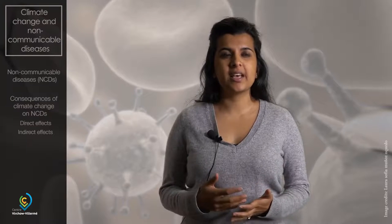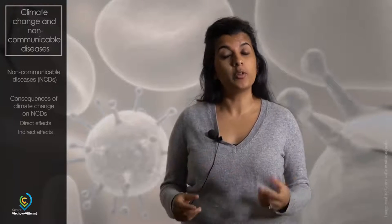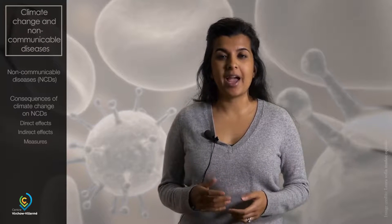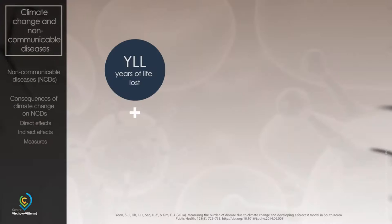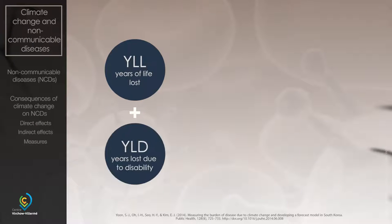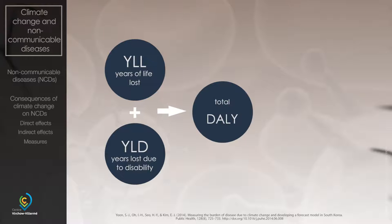Given the variety of risk factors for the development of NCDs, how do we tease out the contribution of climate change from all the other risk factors such as smoking to work out the attributable burden of disease? A common approach is by calculating the disability adjusted life year, or DALY, as a measure of burden of disease by aggregating two key measures: the years of life lost from premature death (YLL) and the years lost due to disability (YLD). The YLD takes into account the severity and time lived with disability.